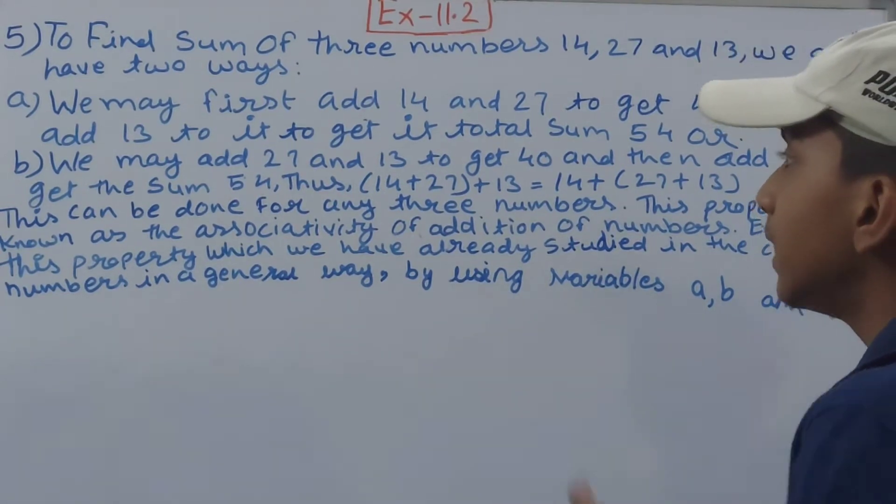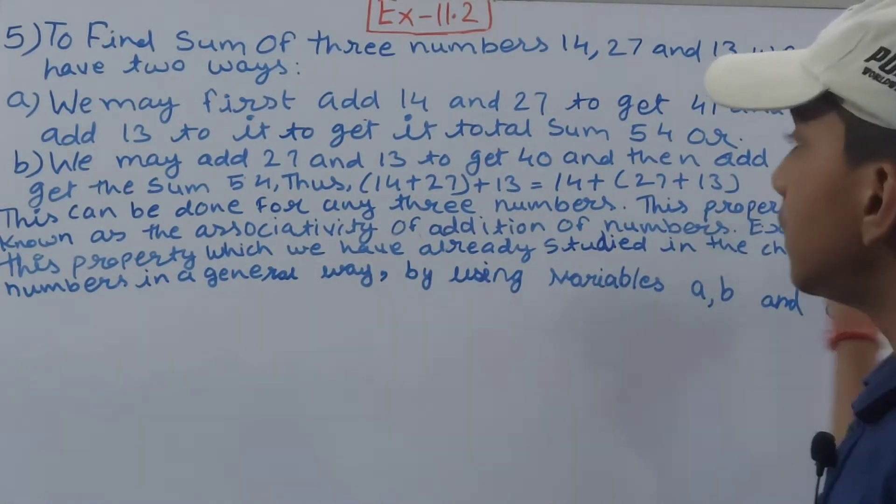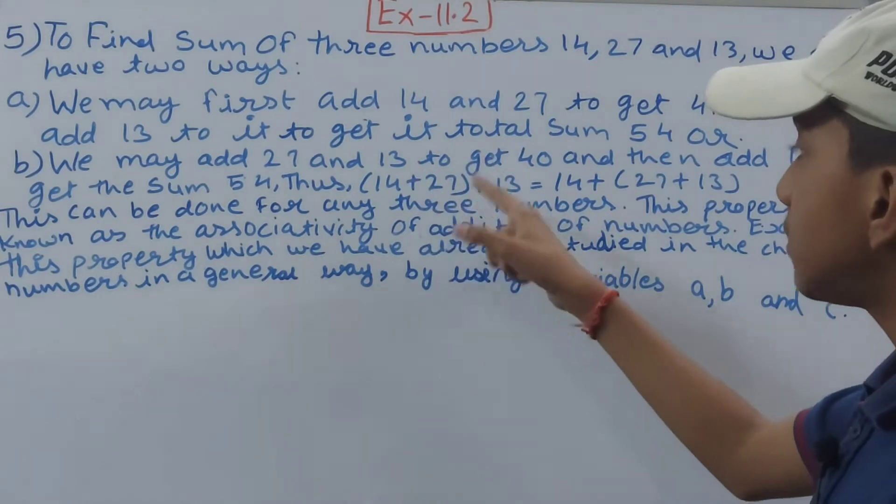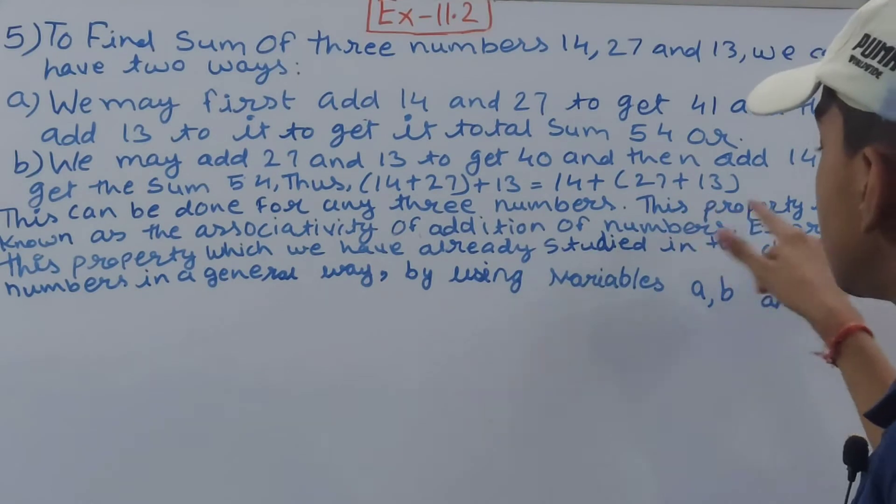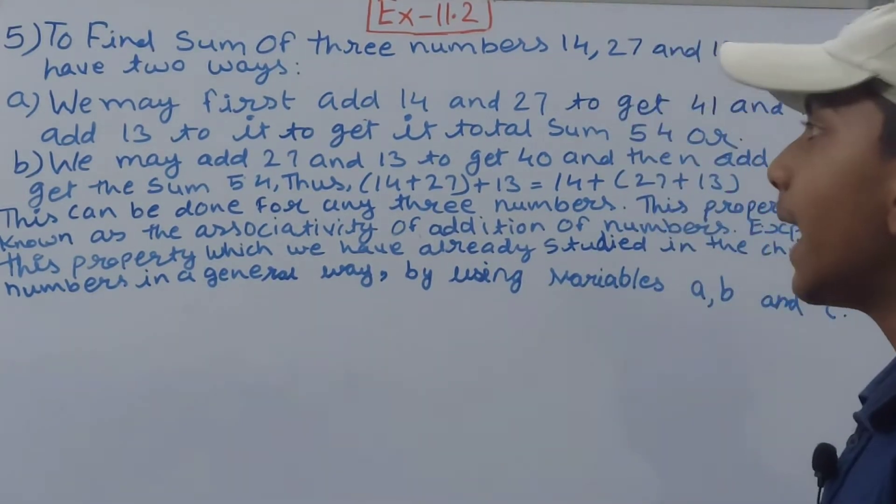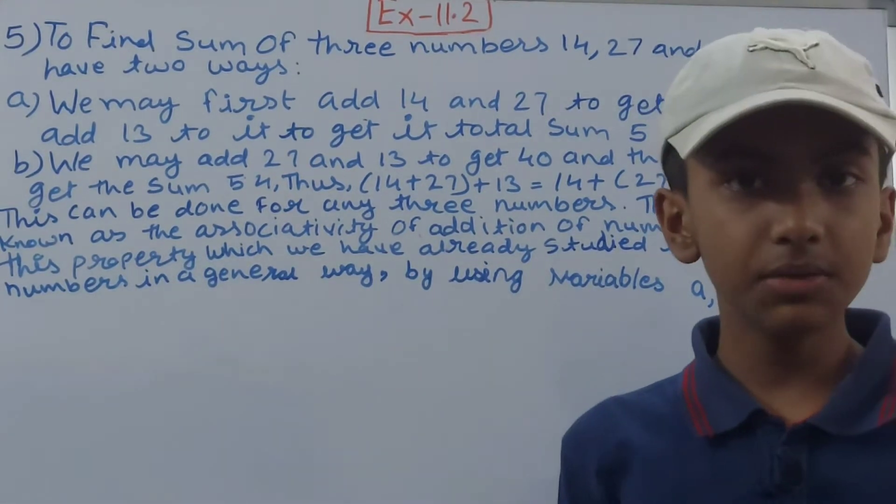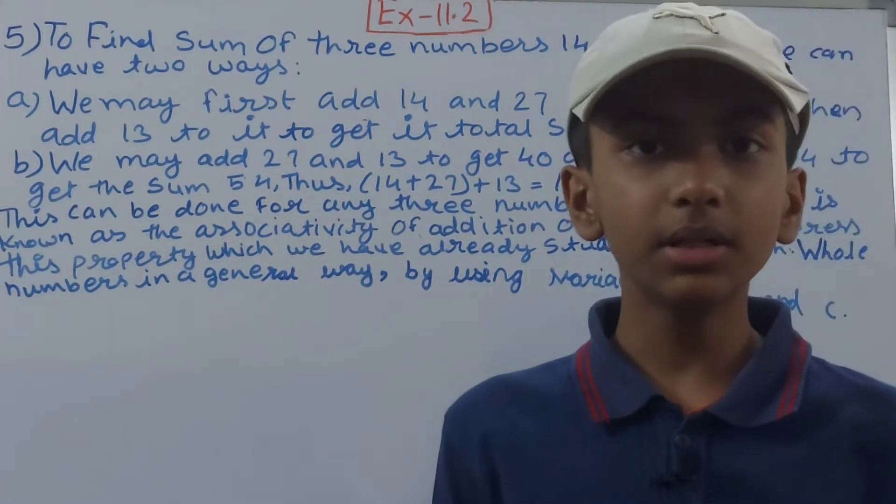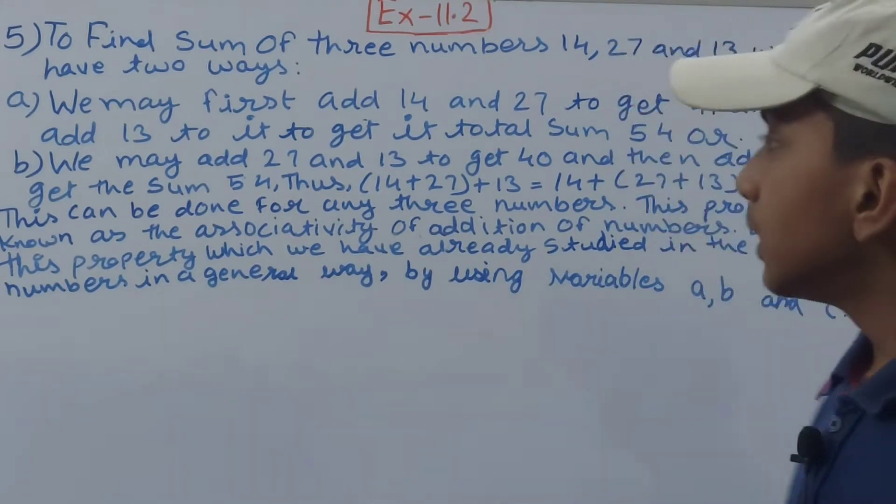Now the second way: we may add 27 and 13 to get 40, and then add 14 to get the sum 54. Thus, 14 + 27 + 13 = 14 + (27 + 13). In the second way, we add 27 and 13 rather than 14 and 27. You will get 40, and then add the third number, 14, to get 54.